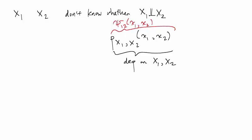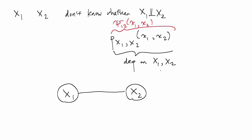We'll use psi to represent tables that depend on two random variables. The graphical model here is going to look like: first we have x1 in a circle, then x2 in a circle, and then we have a line that connects them. The line is here because we have a factor, psi, that depends on x1 and x2. We supply a table psi(1,2). And I will say that the graphical model used for representing this joint probability table is actually not unique.